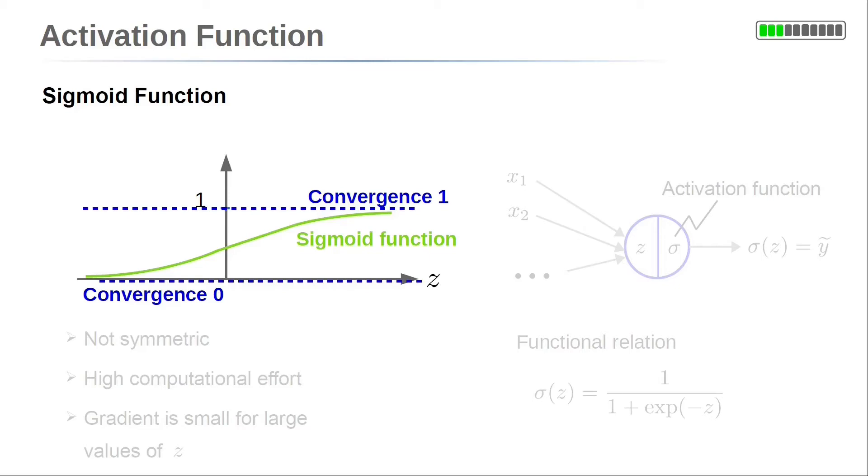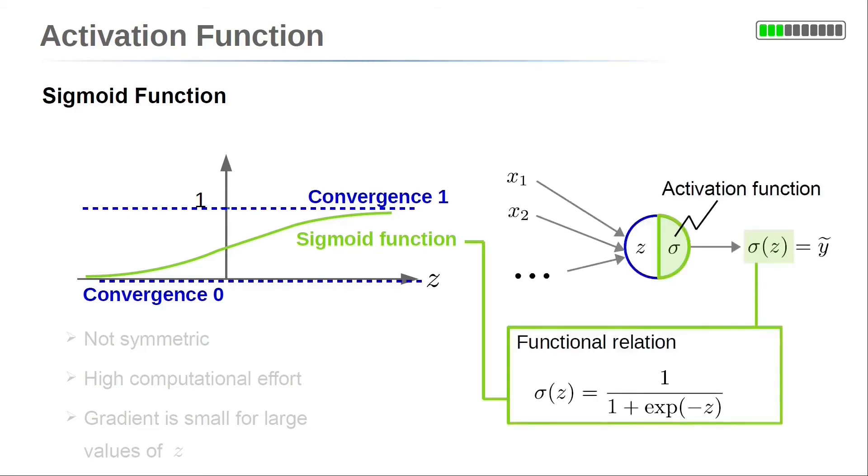The functional relation is 1 over 1 plus exponential function of minus z, the neuron's linear summation. Note that this function is not point symmetric with respect to y is equal to 0.5. Further, the exponential function is computationally expensive to calculate.